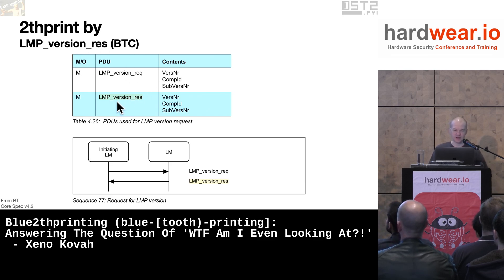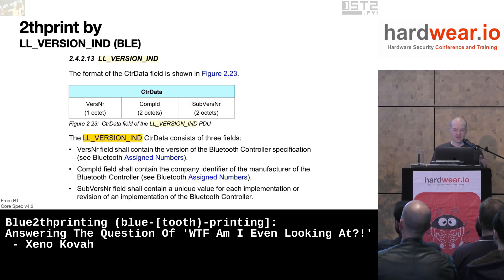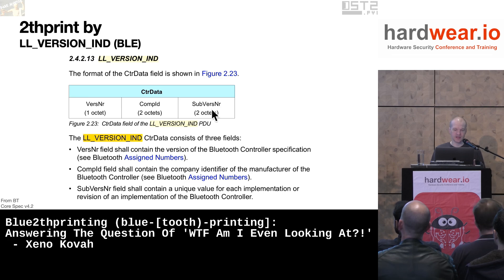For Bluetooth Classic, the spec — this is how they define the data structure for the LMP version request and response. It just tells us there's a version number, a comp ID, and a subversion number, without even telling us the sizes. Later in the spec for the Bluetooth Low Energy version, we see that version number is one byte containing the assigned version number, comp ID is two bytes containing the company ID from the Bluetooth assigned numbers, and then there's a subversion number.